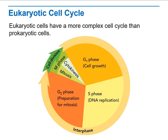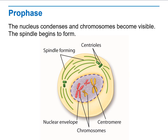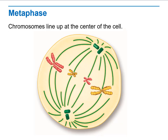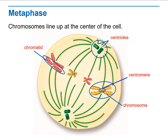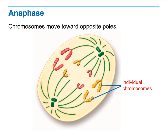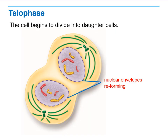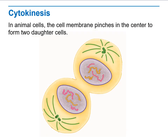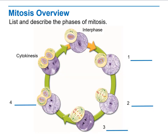Mitosis is a long process that goes through four phases: prophase, metaphase, anaphase, and telophase. At the end, we go through cytokinesis, which is the division of the cytoplasm, where the two daughter cells are finally detached from each other.